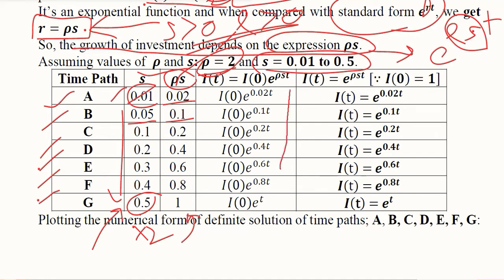Now we write it in the time path expression and you see that the ρs value is appearing where it should, and this I(0) is appearing with all of them because in the formula it is present. We can simplify by assuming that I(0) is equal to 1 unit.